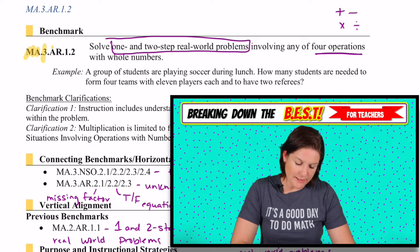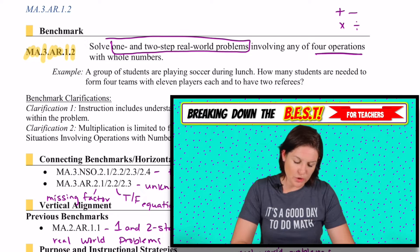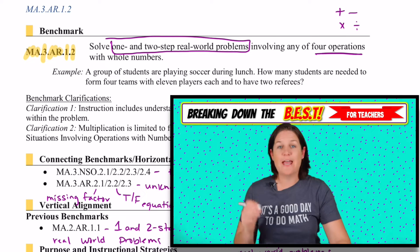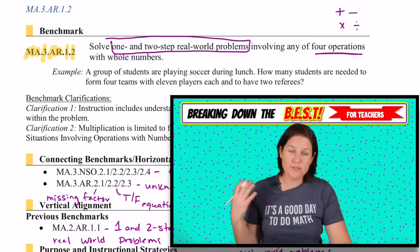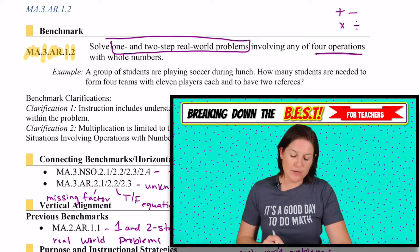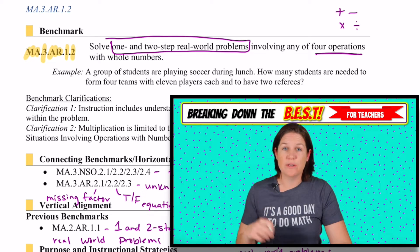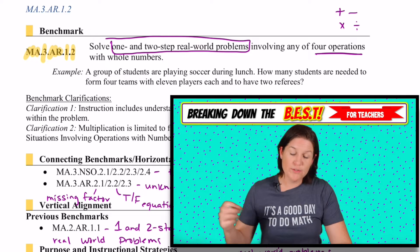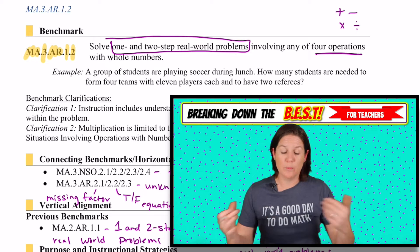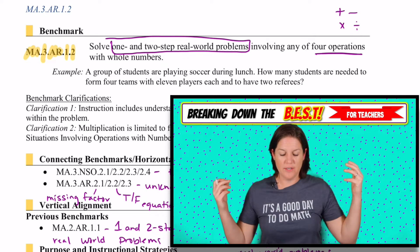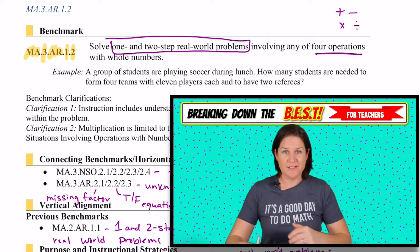MA.3.AR.1.2. That's right — MA stands for mathematics, three for third grade, AR stands for algebraic reasoning, and 1.2 means that we're working with multiplication and division in this standard.